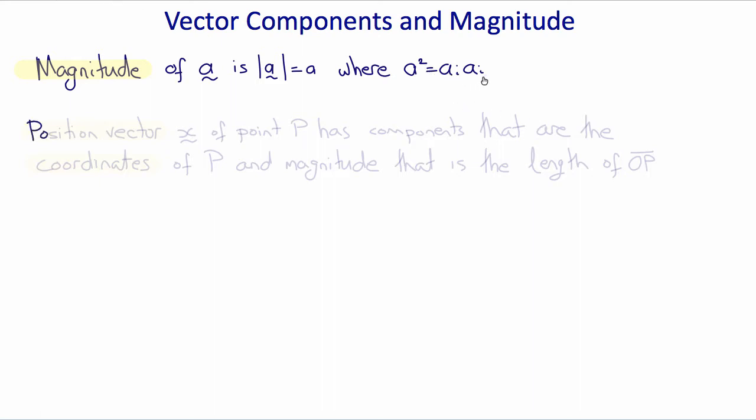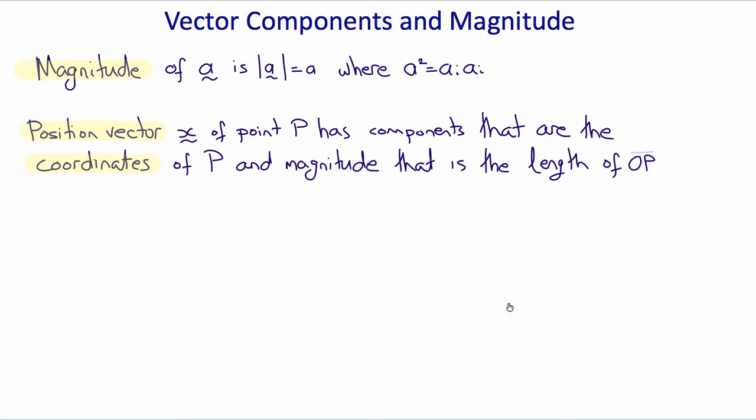A particular vector is a position vector x. The position vector of a point p has components that are coordinates of that point p and a magnitude that is length of the line op. The position vector is an unusual vector. It's the only vector whose components depend on the origin. For this reason it's sometimes referred to as a pseudo-vector.